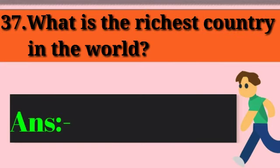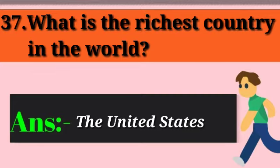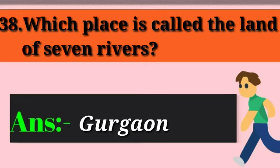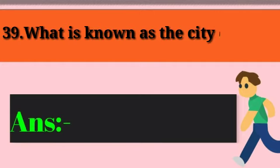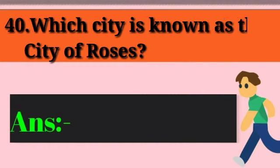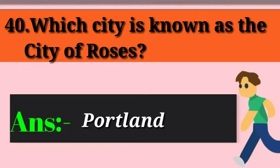Question 37: Which country is the richest country in the world? Answer: United States. Question 38: Which country is called the land of seven rivers? Answer: Punjab. Question 39: What is known as the city of love? Answer: Paris. Question 40: Which city is known as the city of roses? Answer: Portland.